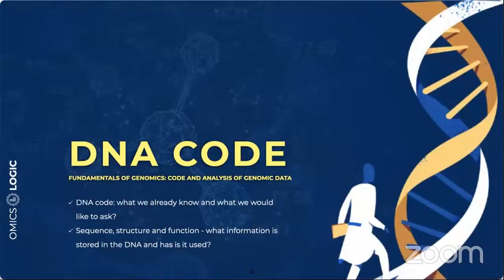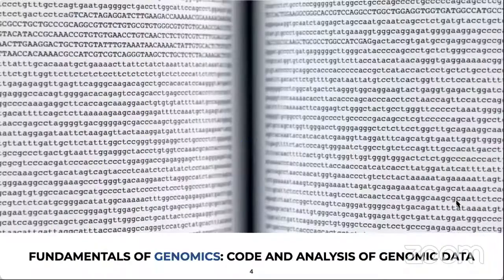Let's start by reviewing the fundamentals of genomics. Genomics is all about DNA. The DNA code is organized like letters that form sentences, sentences form paragraphs, and paragraphs are organized into chapters. Knowing how to read this code can help us decipher the full story of who we are, look into our history, and understand how we are connected to other living things.